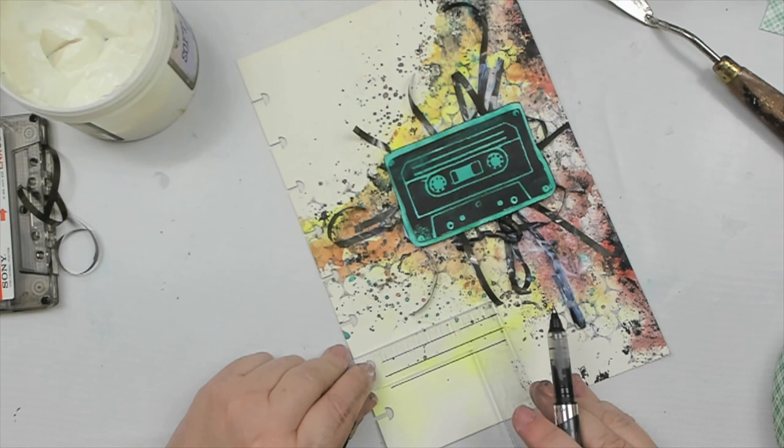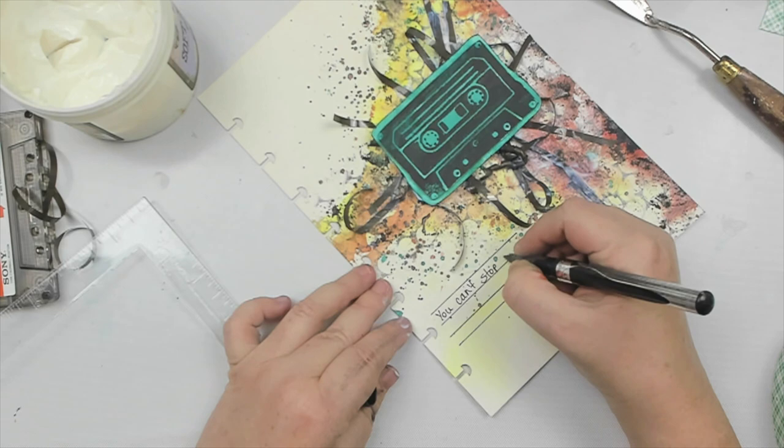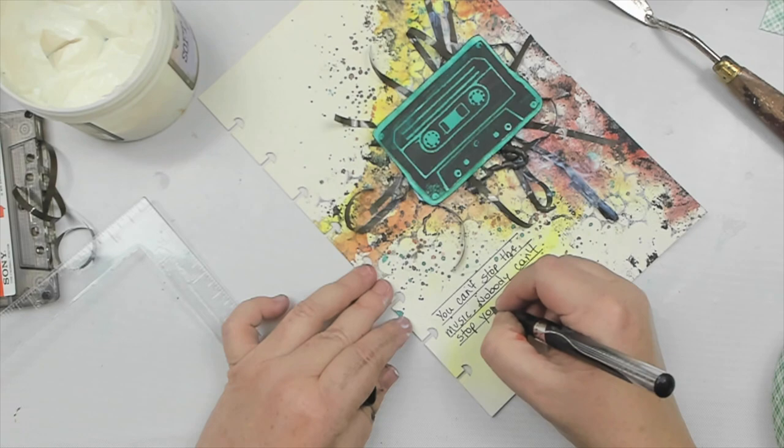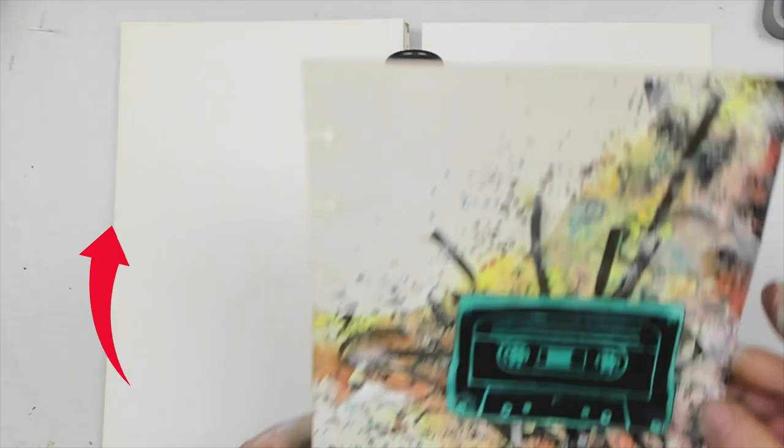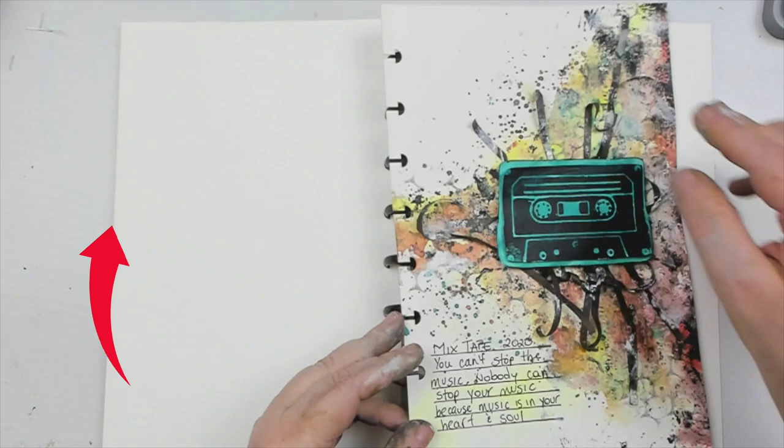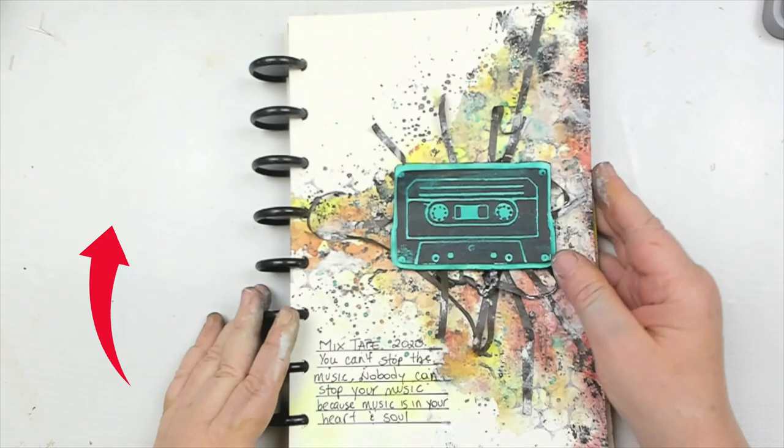I wanted to convey the feeling of how I felt growing up in the 80s and how I loved creating mixed tapes to have my favorite music on tape. Then I just popped it back into my Joggles Disbount journal. And if you want to see some more simple techniques with my foam stamps, click the short playlist right here.